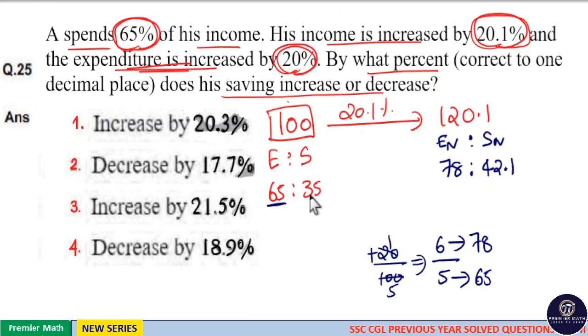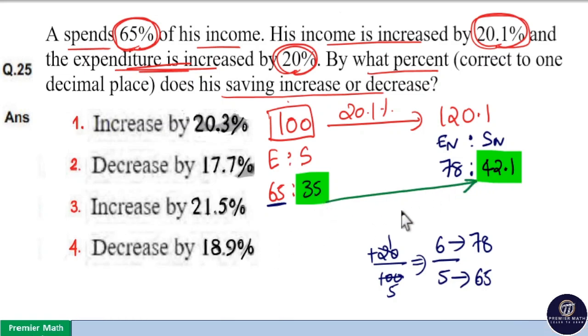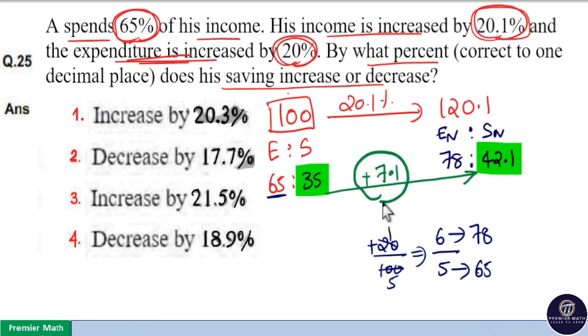Now, you can see initially savings was 35 rupees. Finally, savings is 42.1 rupees. Now, here this is increment. This is increment. Increment is 35 plus 7.1 is 42.1. Here increment is 7.1 rupees.